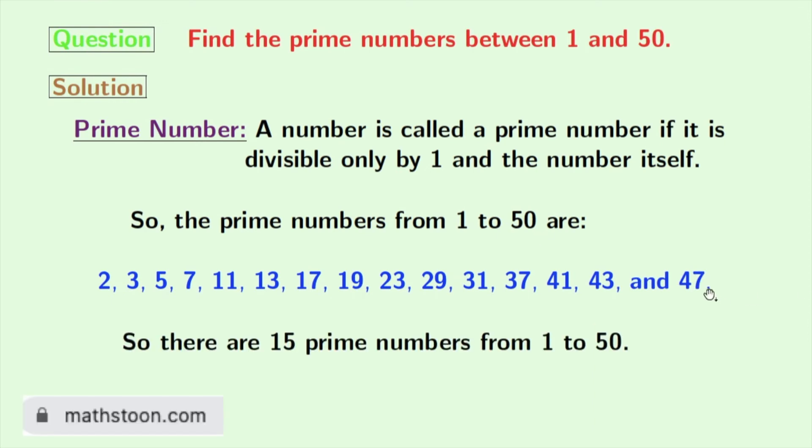So, look at that. There are 15 prime numbers between 1 and 50.